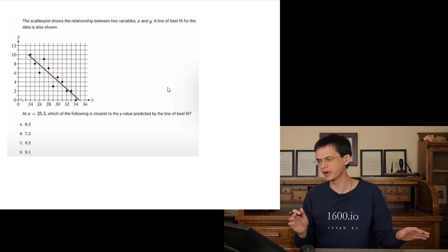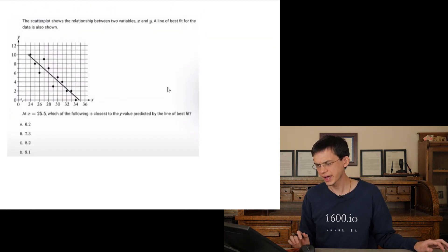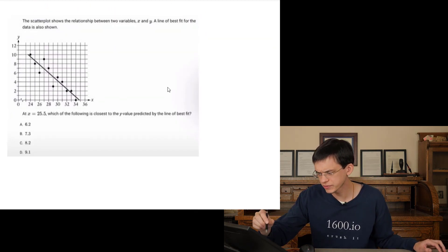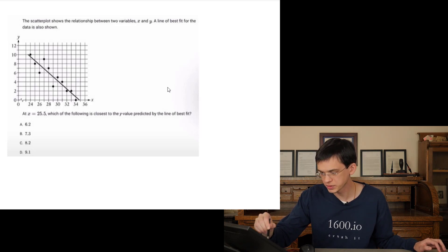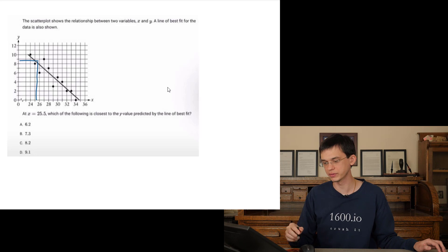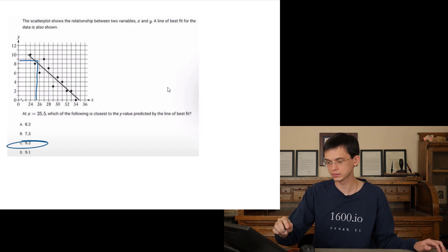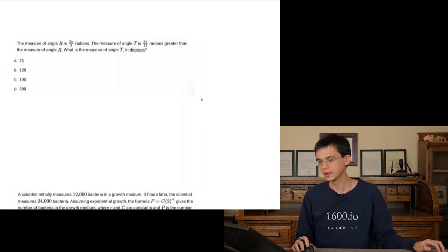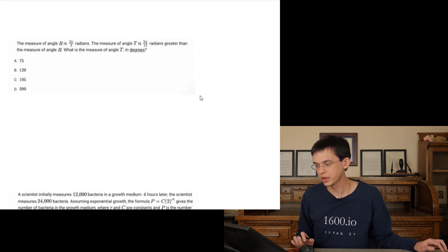The scatter plot shown has x equals 25. Each tick mark appears to be one unit. So at x equals 25, in the middle between 25 and 26, from the line of best fit, it looks like the y-value will be a little bit greater than 8. That's answer C.